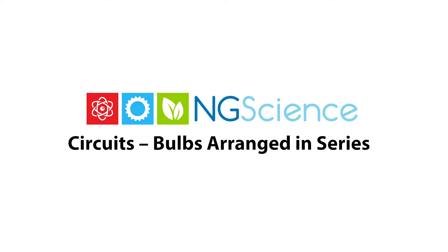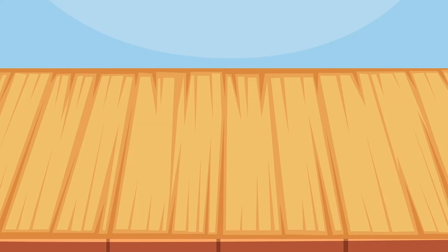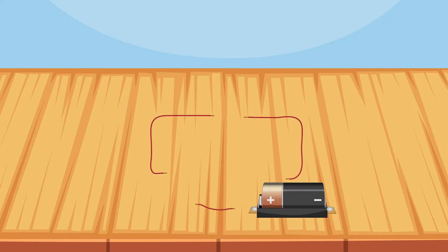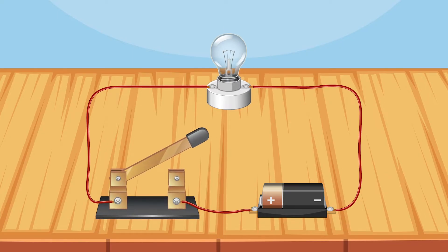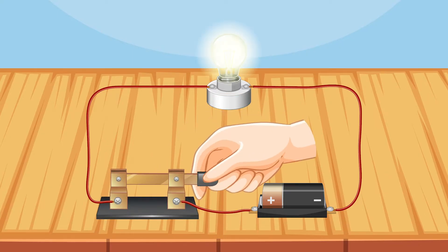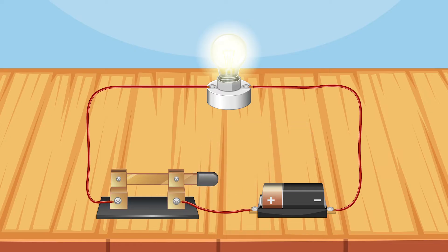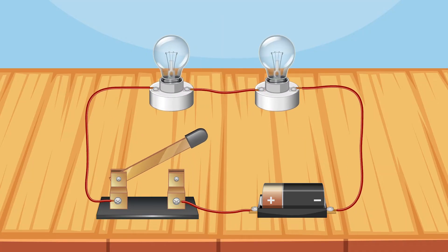Take notes as you watch this video and take the quick quiz at the end. Here we have a simple circuit. It consists of a battery, wires, a bulb, and a switch. When the switch is closed, there is a complete path for the electricity to flow and the bulb lights up. Now let's add another bulb to the circuit.